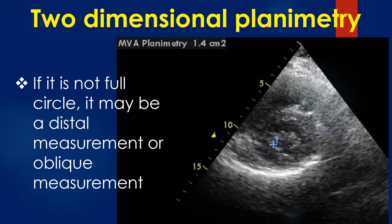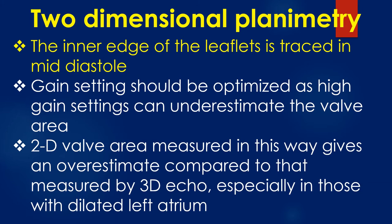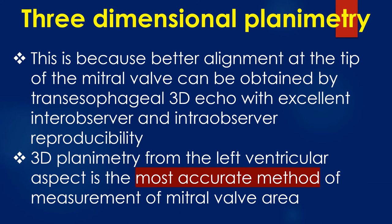If it is not a full circle, it may be a distal or oblique measurement. Mitral valve area by planimetry is usually obtained from the parasternal short axis view, but can also be obtained from the basal transgastric short axis view by transesophageal echocardiography. The inner edge of the leaflets is traced in mid-diastole. Gain settings should be optimised, as high gain settings can underestimate the valve area. Two-dimensional valve area measured in this way gives an overestimate compared to that measured by three-dimensional echocardiography, especially in those with a dilated left atrium.